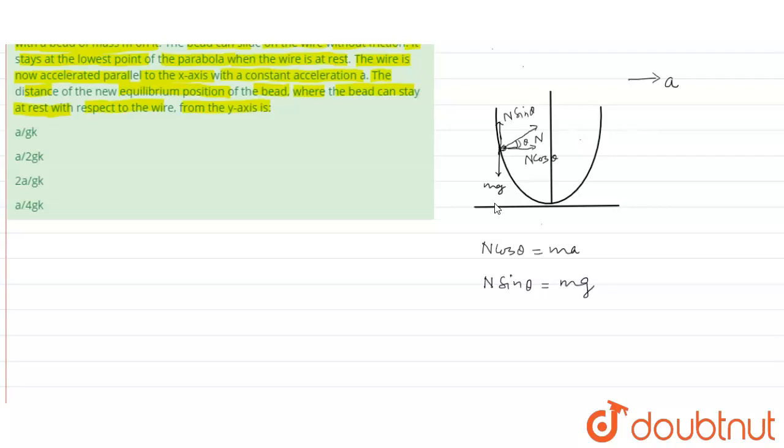If we divide them, then we will get cot theta that will come out to be A by g.